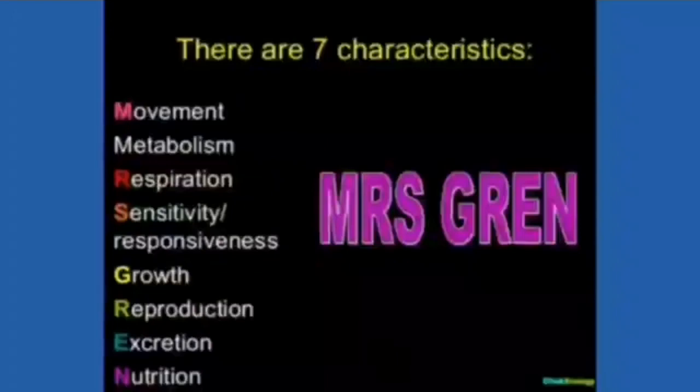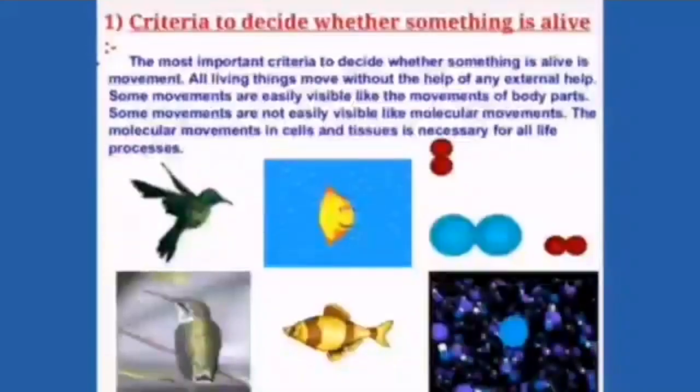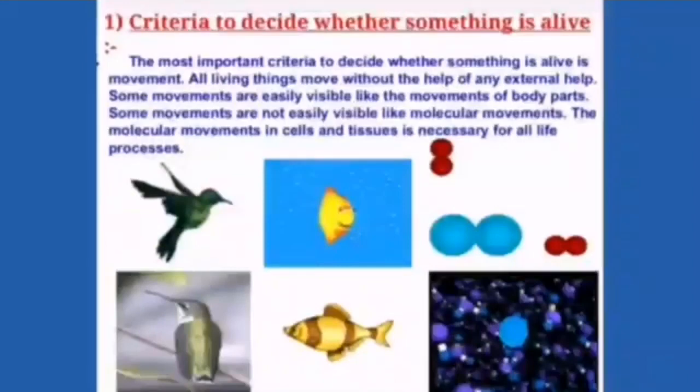Now the most important of these characteristics is movement which is of two types. It is visible, that is change in position or any of the body parts, and it can be invisible that can occur at level of molecules. Both these visible and invisible movements are the deciding factor whether something is alive or not. Thus we can say the most important criteria to decide whether something is alive is movement.